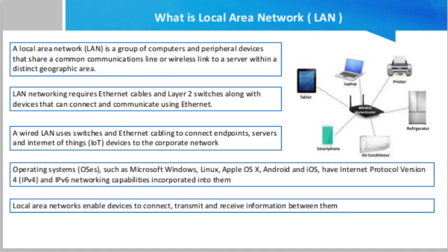Setting up a wired LAN requires an administrator to connect the end device to a LAN switch using a twisted-pair Ethernet cable. Once connected, the devices can communicate with each other on the same physical LAN or VLAN. To set up a wireless LAN, the administrator needs a wireless access point (WAP), which can be configured to broadcast a network SSID and require devices to authenticate using Wi-Fi authentication technologies. Popular options include WPA2 pre-shared key (PSK) or WPA2 Enterprise.